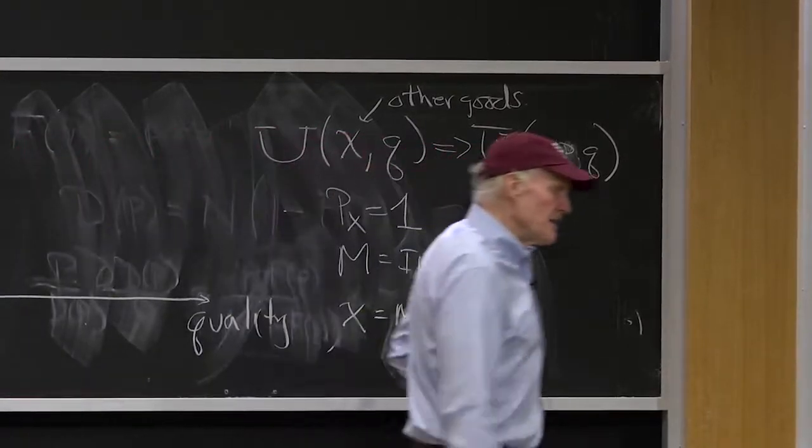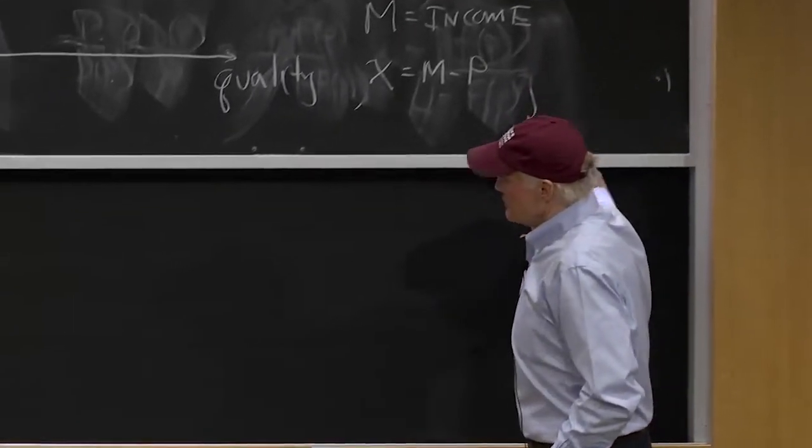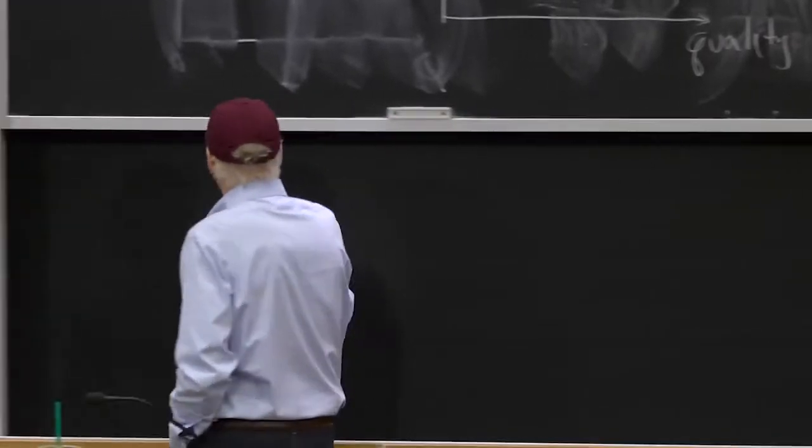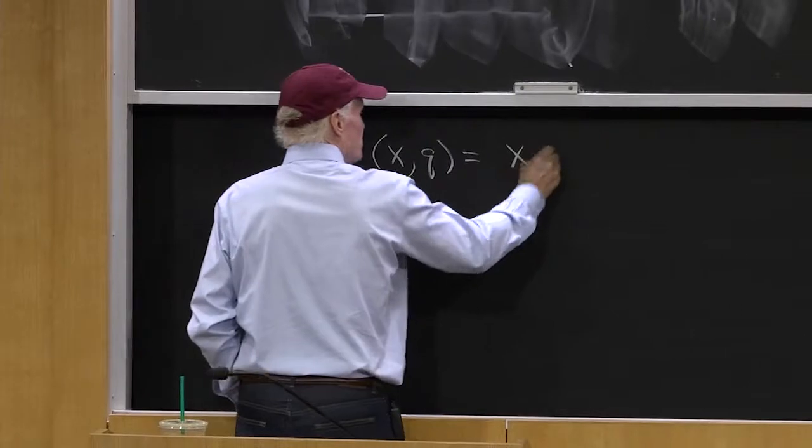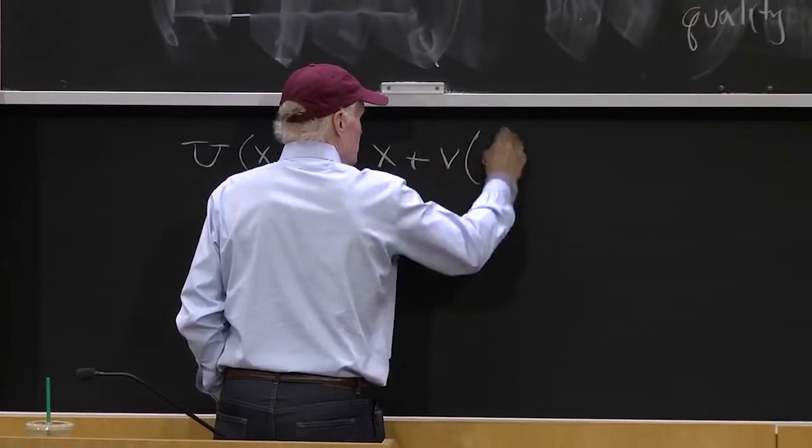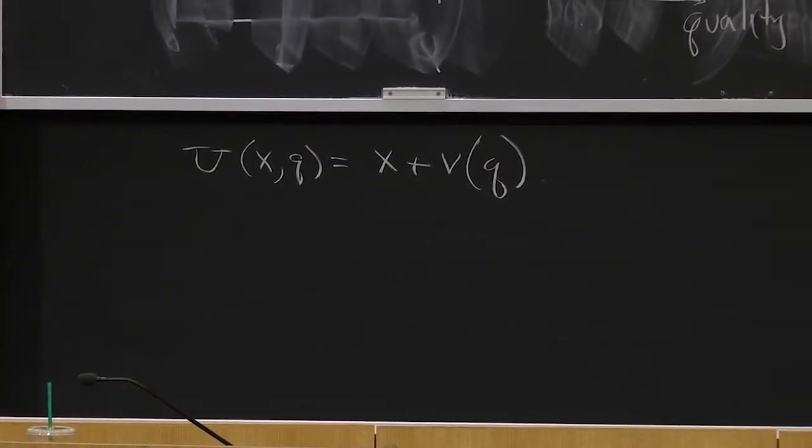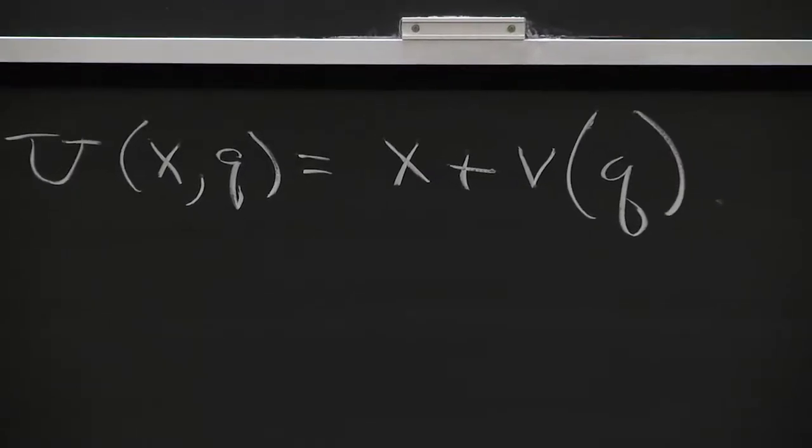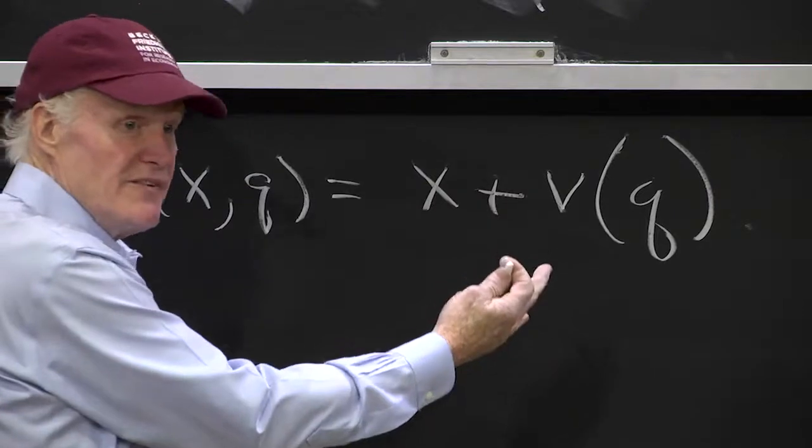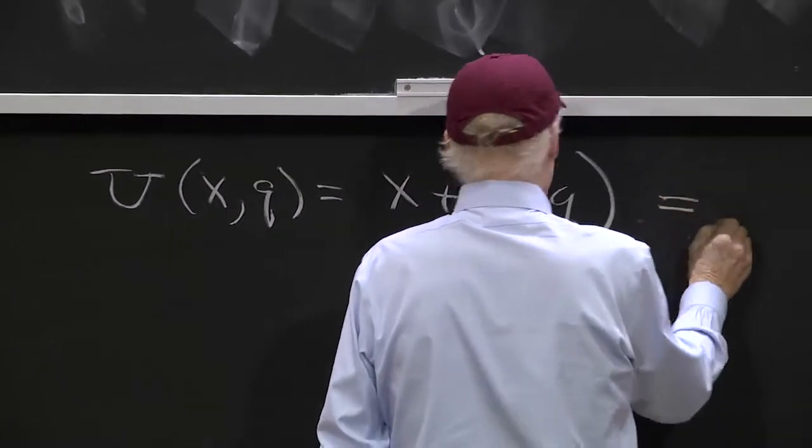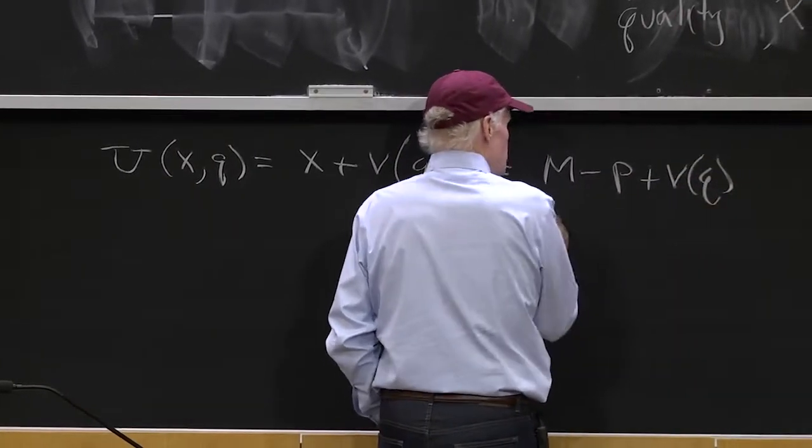Now a common assumption that people make is what people would call quasi-linear preferences, which is u of x and q equals x plus v of q, or something like that. That is a common form they take, which is basically to say I got a constant marginal utility of income because it's linear in x. And then it's really easy because then what you do, this is equal to m minus p plus v of q.